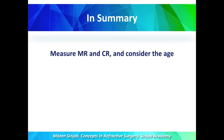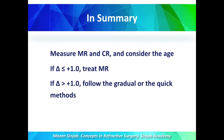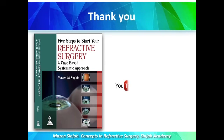In summary: measure manifest refraction and cycloplegic refraction, and consider the age of the patient. If the difference is less than or equal to 1, treat the manifest refraction. Otherwise, follow the gradual or quick methods. If there is astigmatism, use the manifest astigmatism. Thank you very much.